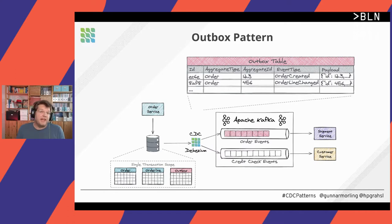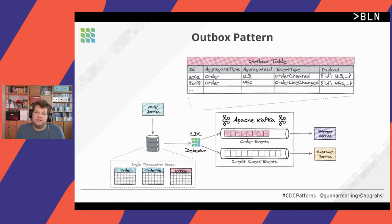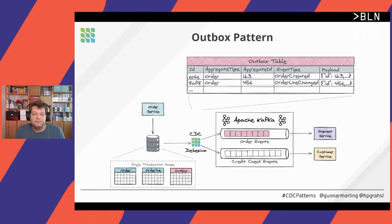There's also an aggregate ID, which helps route events to ensure a consistent ordering for the same aggregate. Most importantly, there's the payload — a structure you define yourself, for example a JSON structure. This is the message sent to your external consumers. Since you do this insert within the same transaction in which you updated your business tables, you have full transaction guarantees.